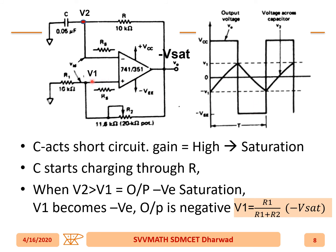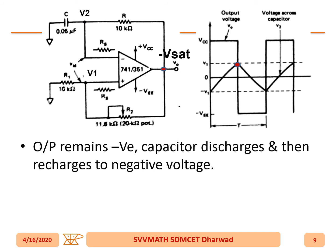The V1 equation is given by R1 divided by (R1 + R2) times the output. Now the output of the operational amplifier is -Vsat. So V2 becomes more than V1, and the output becomes -Vsat. The output remains negative; the capacitor discharges up to zero, then starts charging in the opposite direction.